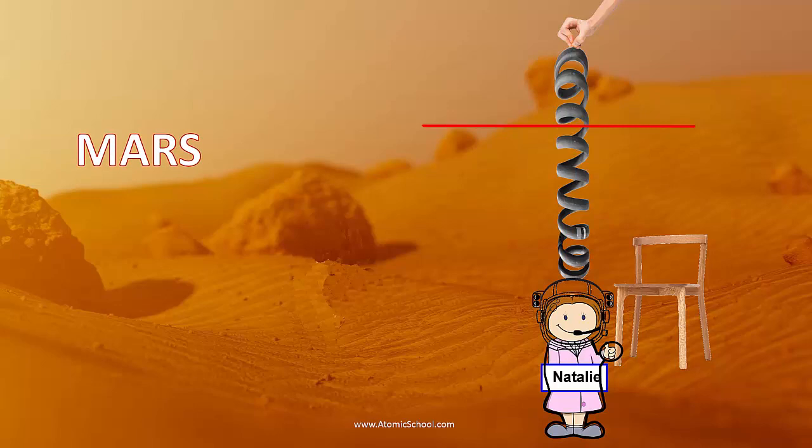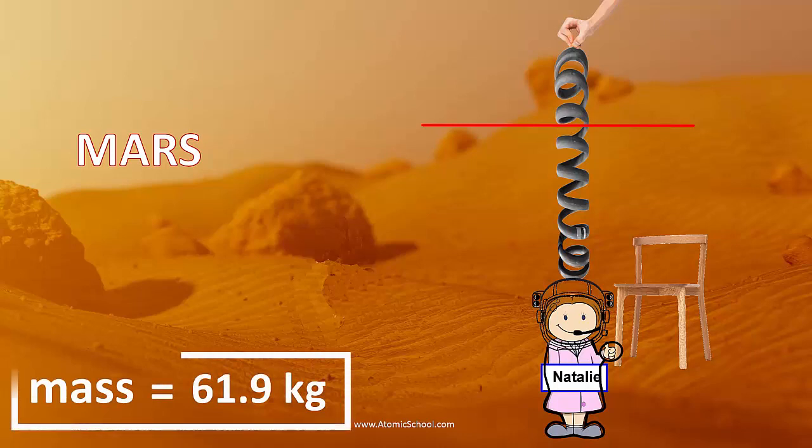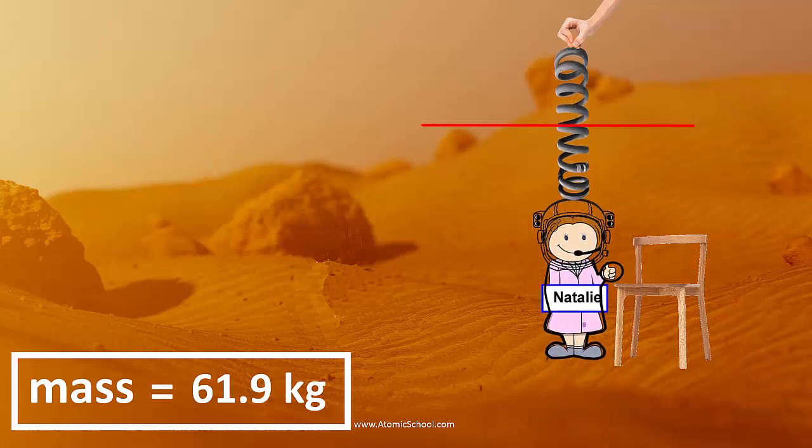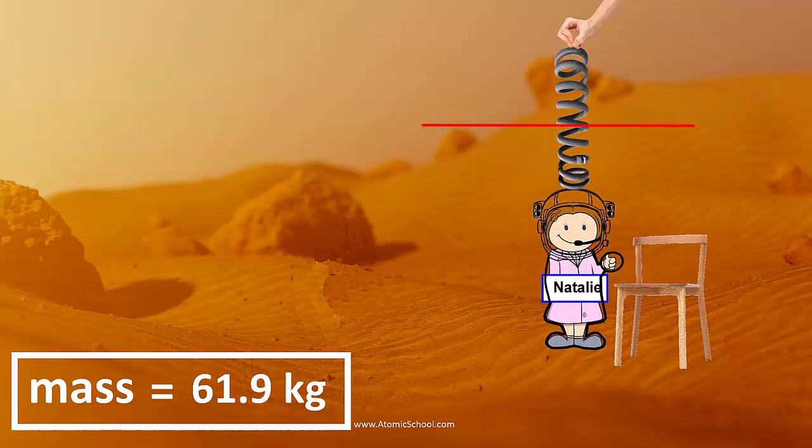If Natalie goes to Mars, her mass will still be 61.9 kilograms, because she's still made of the same atoms. Her amount of matter hasn't changed. Natalie didn't leave any of herself behind. But her weight on Mars is only 230 Newtons. She's a lot lighter.